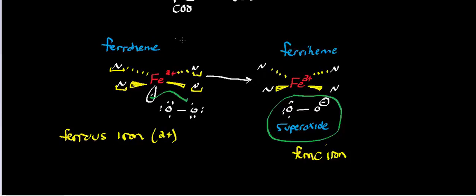This is essentially going from ferroheme to ferriheme. The 'ferro' designation indicates ferrous iron, the 'ferri' designation indicates ferric iron. This process of going from ferroheme to ferriheme is spontaneous and happens non-enzymatically when the iron reacts with molecular oxygen.